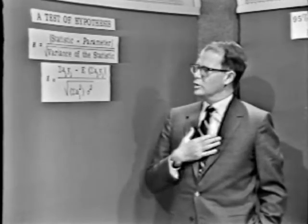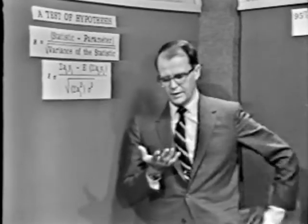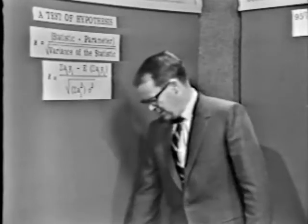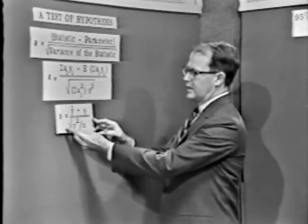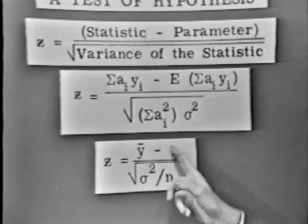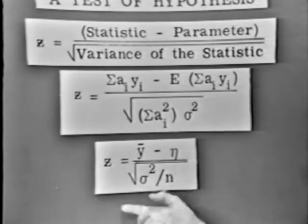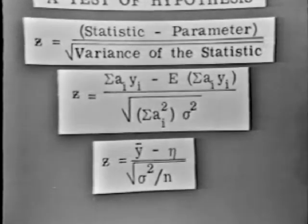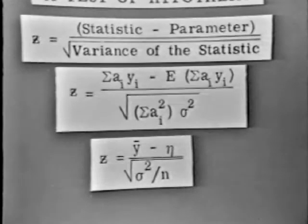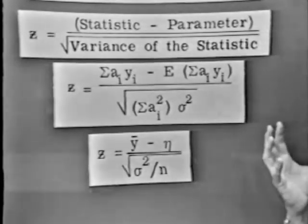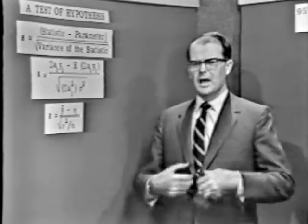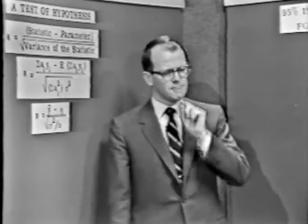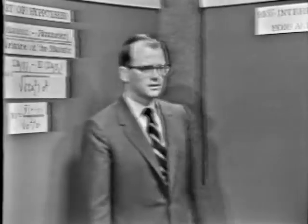Let's make the problem more detailed. Consider the problem where we're dealing with a mean: we've collected some data, determined the average, and want to test a hypothesis about the mean. The average is a linear statistic. The expected value of the average is the mean, and downstairs we divide by the square root of sigma squared over n. If we also wanted to make an interval statement about what we thought the mean to be, the point estimate would be the statistic — the best estimate of the parameter — but it's called a point estimate.